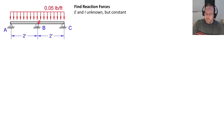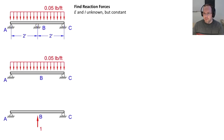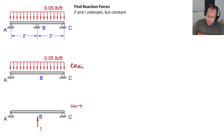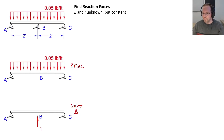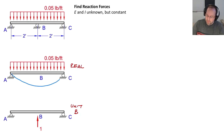I'll choose to remove support B and apply the constraint that my displacement at B is equal to zero. In the resulting determinate system, I have both the real load system and a unit load system located at B. I don't know the reaction force yet — that's what I want to solve — so for now I'll leave it as a unit load. I can then look at the displaced shape under both the real applied loads and under this unit load.